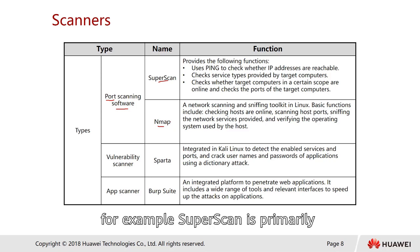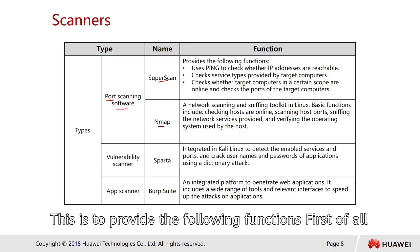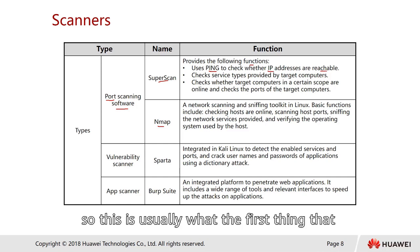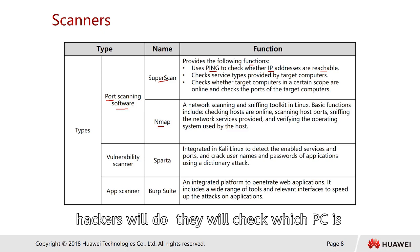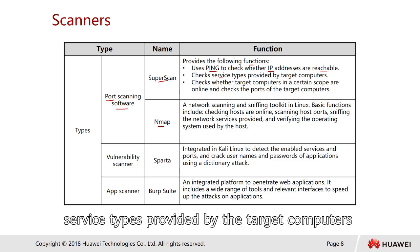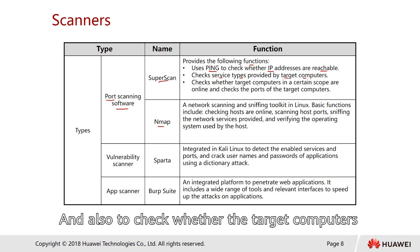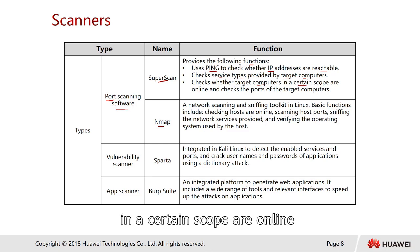SuperScan is primarily designed for Windows users. It uses ping to check whether IP addresses are reachable — usually the first thing a hacker does — then checks service types provided by target computers, which means the ports opened by those computers, and checks what ports are on the target computers.